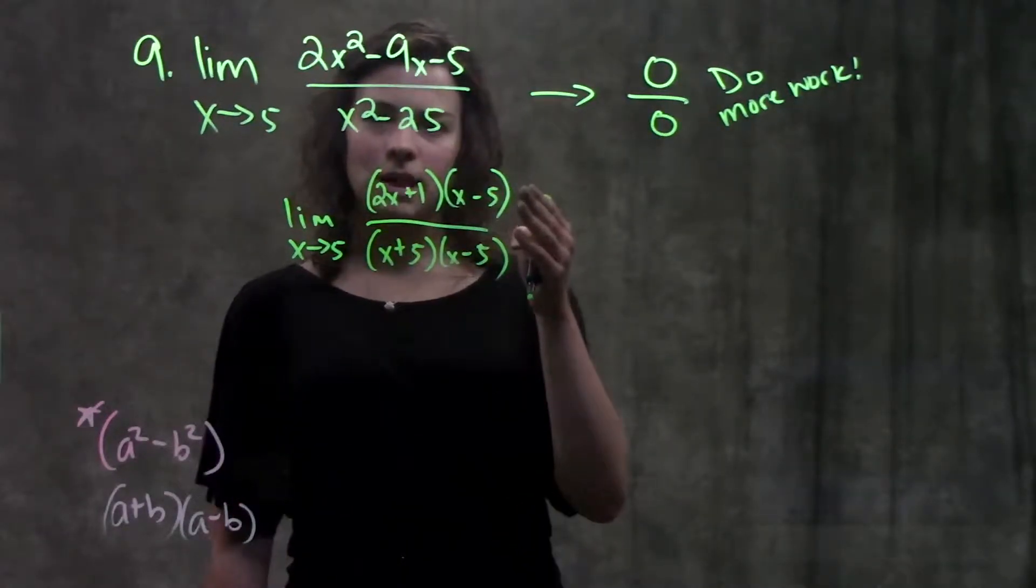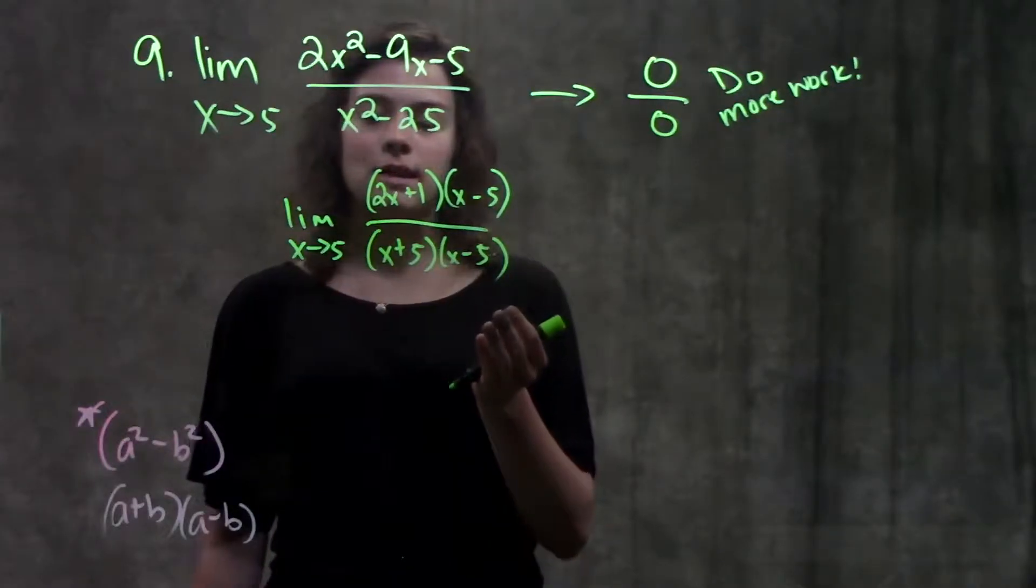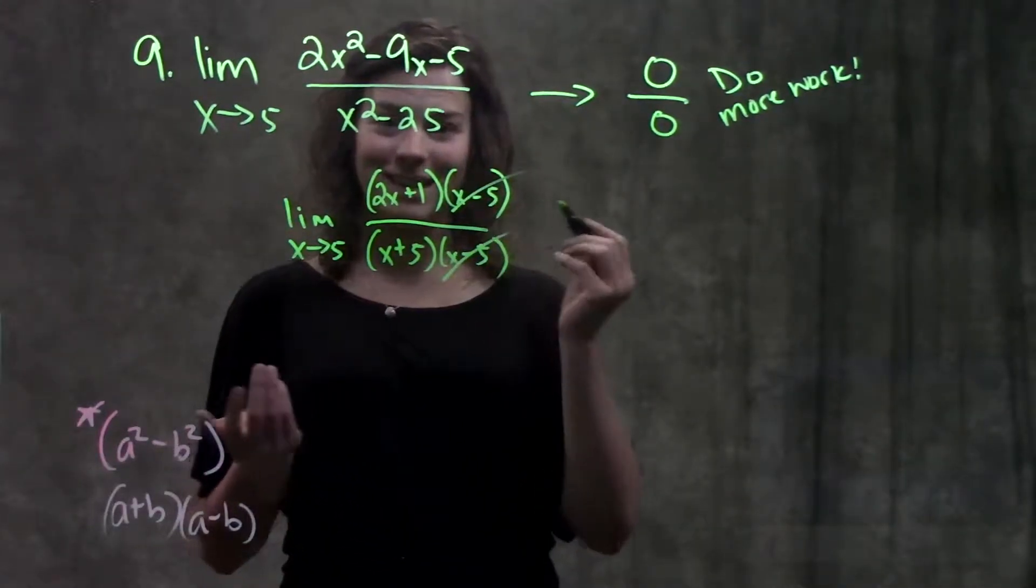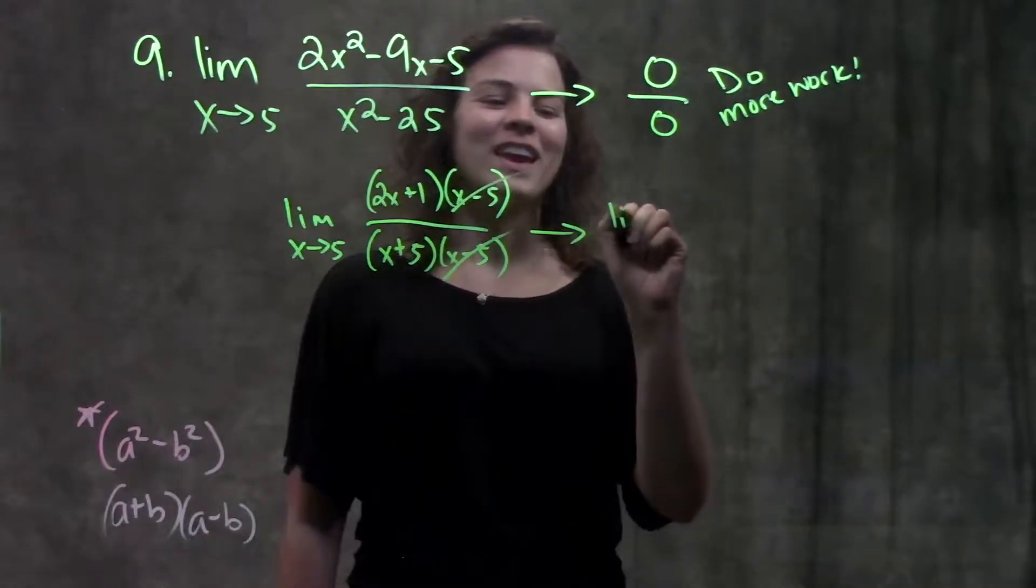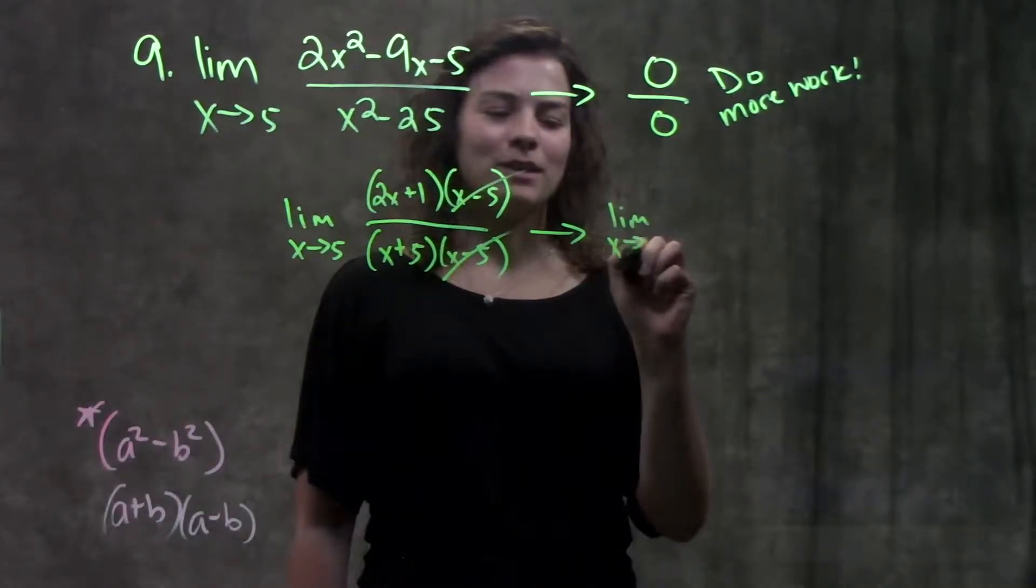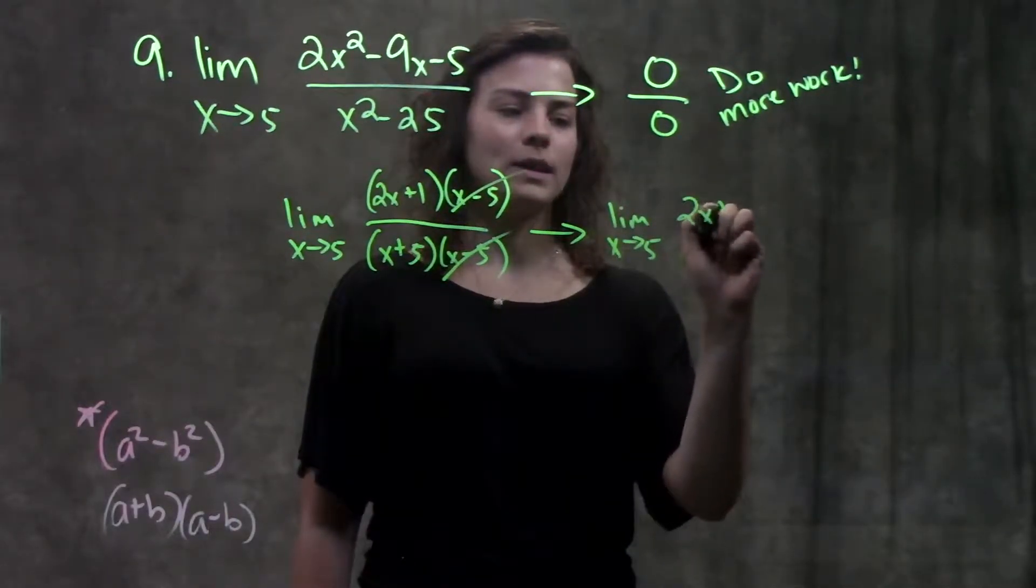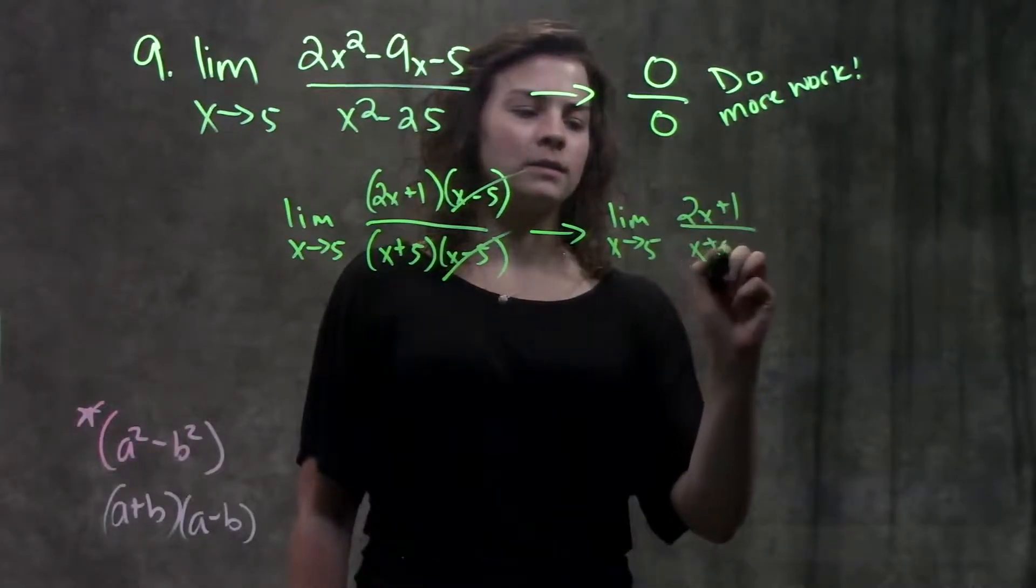Alright, so I factored both my top and my bottom. Now I look to see if anything cancels, which conveniently, it does. Okay, after I cross out my common factors, now I'm just left with (2x + 1) over (x + 5).